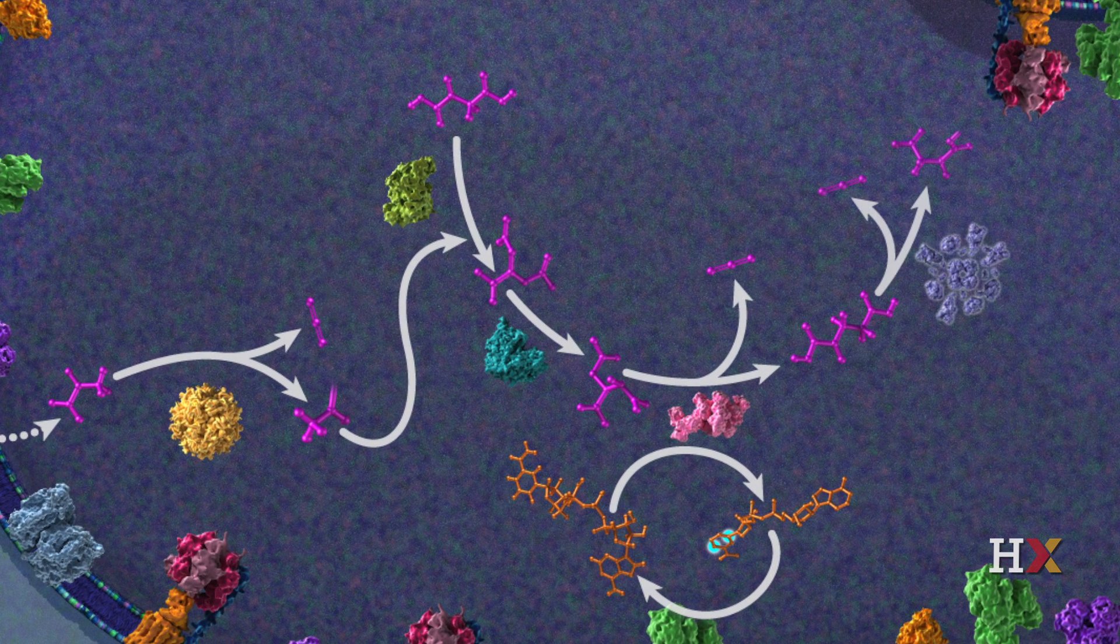In the fourth step, alpha-ketoglutarate is decarboxylated and oxidized to produce another molecule of carbon dioxide by alpha-ketoglutarate dehydrogenase. The resulting molecule is combined with coenzyme A, forming succinyl CoA.